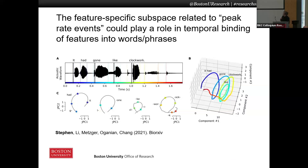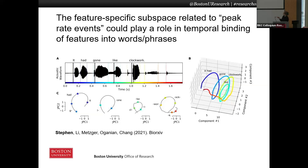This is going to allow us to discover feature-specific subspaces in the high-dimensional neural activity that might tell us something about the task of speech perception. In particular, I'm showing you latent dynamics related to that peak rate feature that we think are actually playing an important role in the temporal binding problem I mentioned before. If you're interested in that, I would encourage you to take a look at this paper, currently on BioRxiv, but soon to come out in Hearing Research.